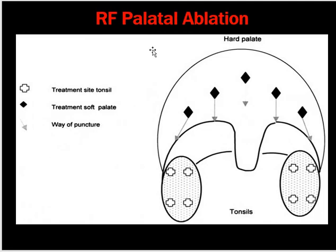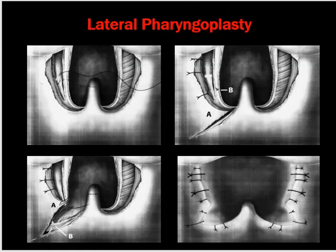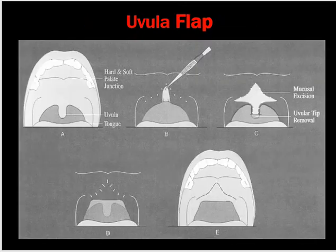Radio frequency palatal ablation targets different points in the palate to enlarge the breathing area. Tonsils can also be reduced in size by radiofrequency ablation. Lateral pharyngoplasty involves removing the lateral pharyngeal bands, suturing the anterior and posterior tonsillar pillars, and increasing the respiratory area. The basic aim of all palatal surgeries is to make the airway larger.